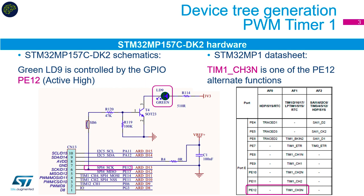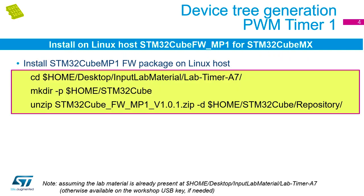On our MP157C discovery board, from the schematics you can see that port E12, or PE12, is connected to LED number nine, which is one of the green LEDs on the bottom of the circuit board. Looking at the datasheet, PE12 is connected to timer one channel three negative, which we're going to use to control the LED flashing on and off once every second.